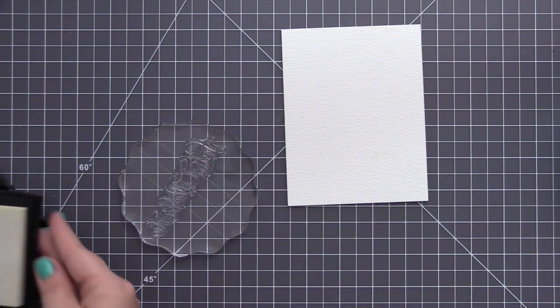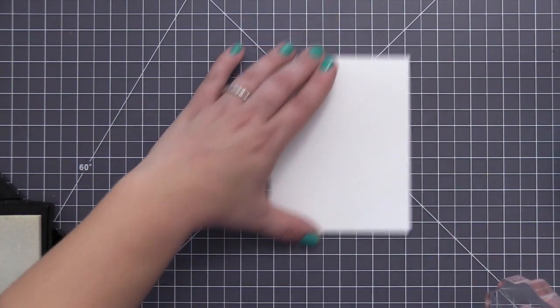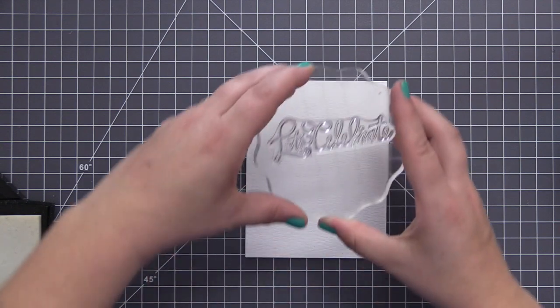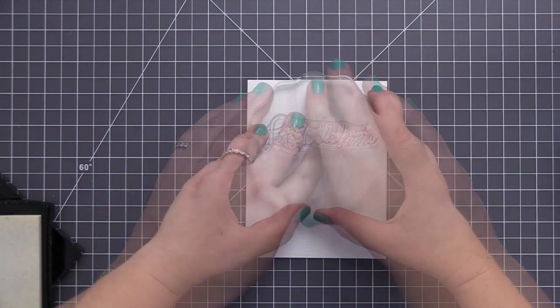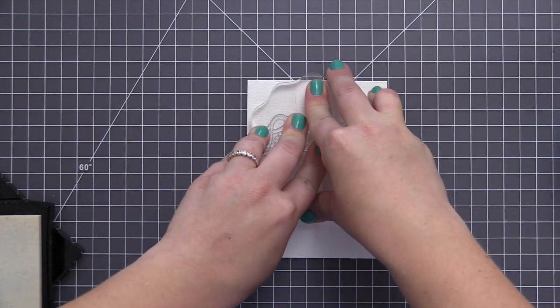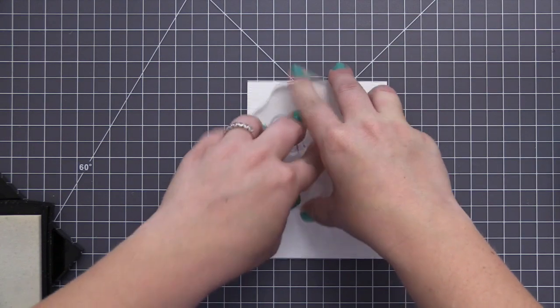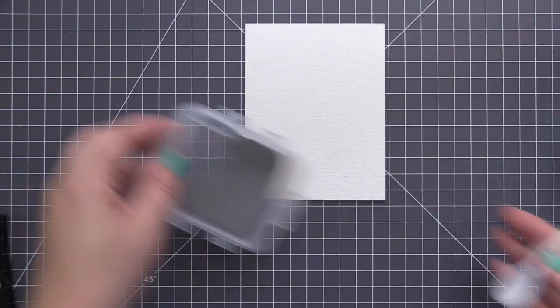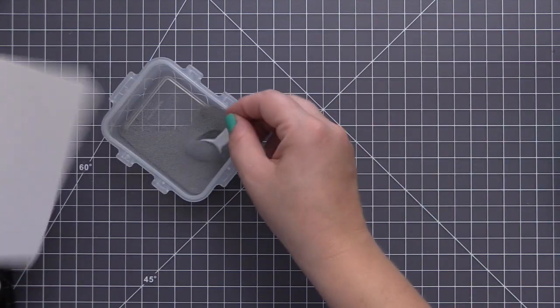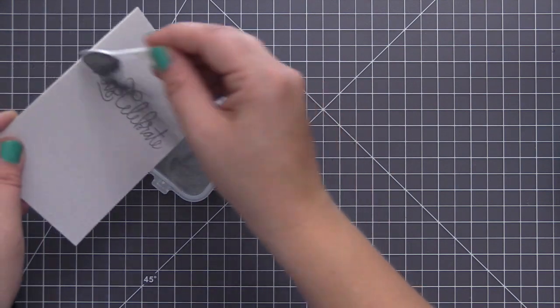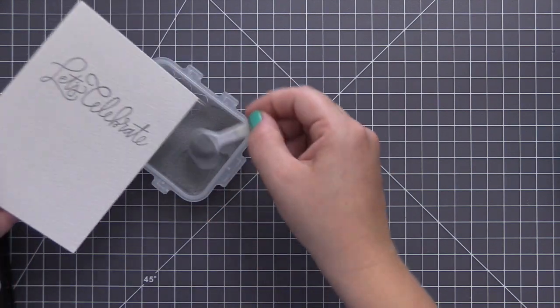If you haven't done it before and you're not familiar with this technique, emboss resist is simply stamping with a sticky ink. I'm using Versamark, which is a clear ink that's really super sticky. And then you just put embossing powder over top of that inked image and you heat set it with a heat gun. What that does is it heat sets the embossing powder and depending on what kind you're using will give you different looks.